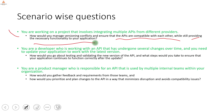You are a product manager responsible for an API used by multiple internal teams. How do you gather feedback, prioritize, and plan changes to minimize disruption and avoid compatibility issues? Refer to the earlier answer: identify requirements from each team, maintain the API spec and documentation, set up notifications, and ensure metrics and monitoring are all in place while maintaining different versions of the API.